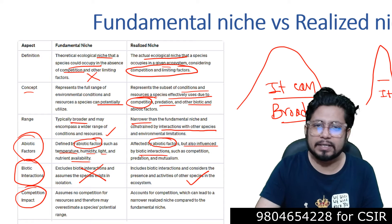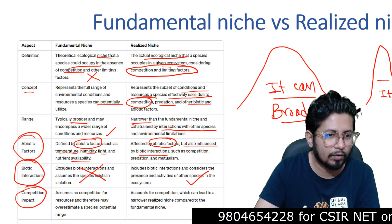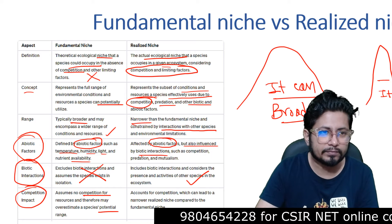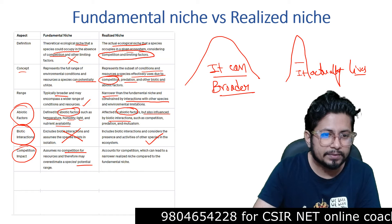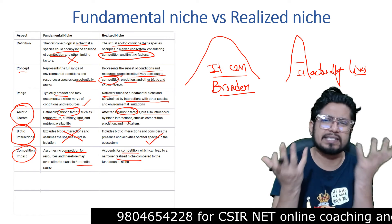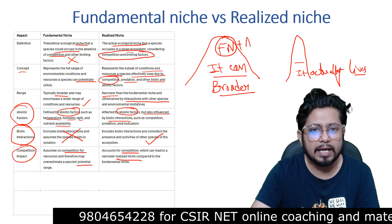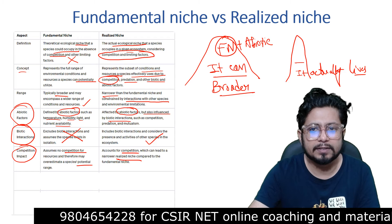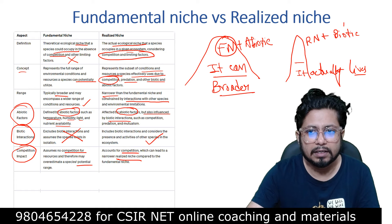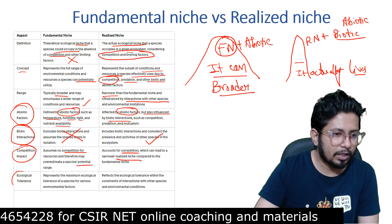Regarding competition impact: fundamental niche assumes no competition for resources and therefore may overestimate a species' potential range. Realized niche accounts for competition, which can lead to a narrower niche compared to the fundamental niche. So the niche is broader in the case of fundamental niche and related only to abiotic factors, while realized niche is related to both abiotic and biotic factors together.